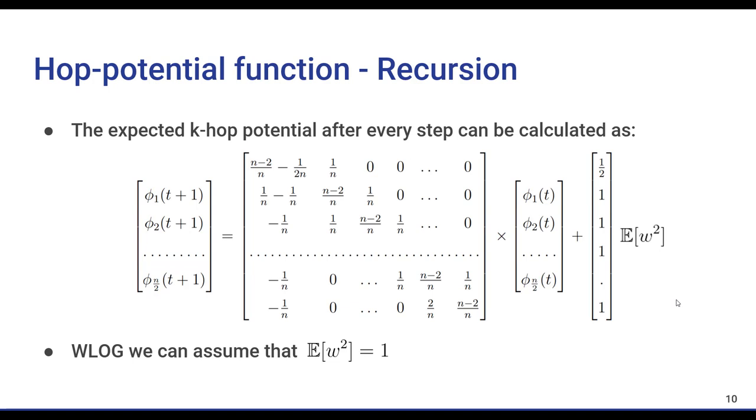By looking at this equation, we can clearly see that the expected values of the k hop functions after one step is a linear transformation of the values in the previous step plus some constant. Before continuing, first we have to address what we're going to do with this expected value of w squared,